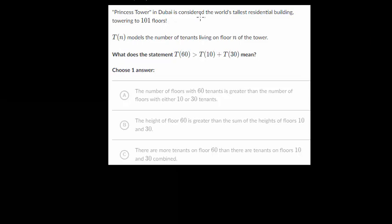So we have Prince's Tower in Dubai. It's considered the world's tallest residential building, towering to 101 floors. So T of N models the number of tenants living on floor N of the tower, and we need to determine what does this statement mean.